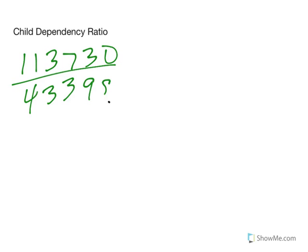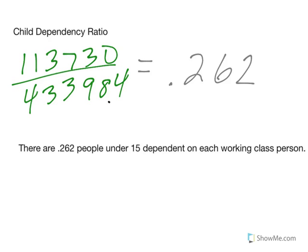Our child ratio is 113,730 over the working class. As a decimal, 0.262. There are 0.262 people under 15 dependent on each working class person. Little over a fourth of a child is dependent on each person.